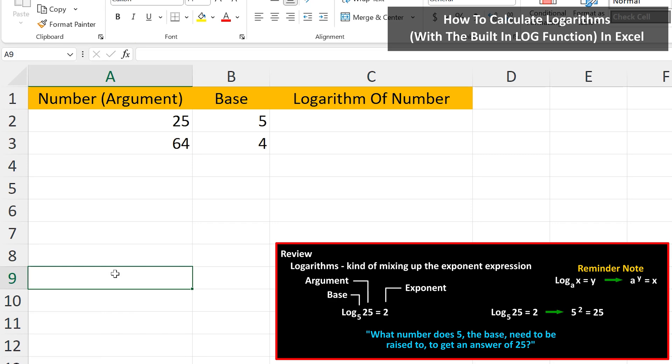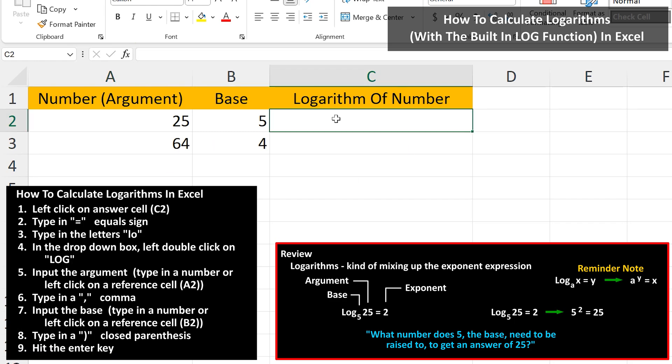For the first example, we're going to put the answer in cell C2, so left-click on cell C2. Next, we type in an equal sign.